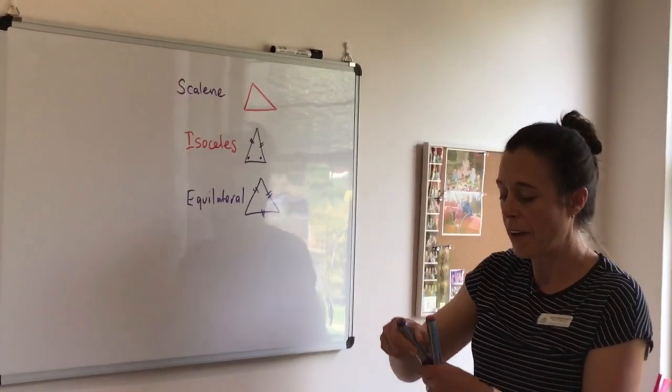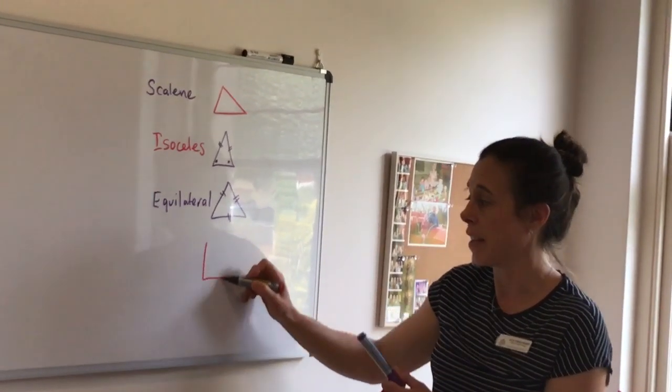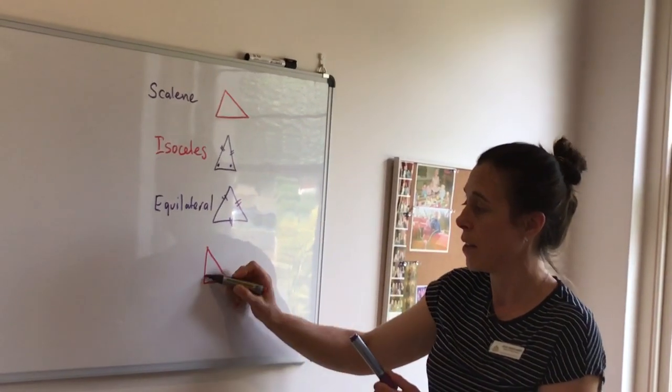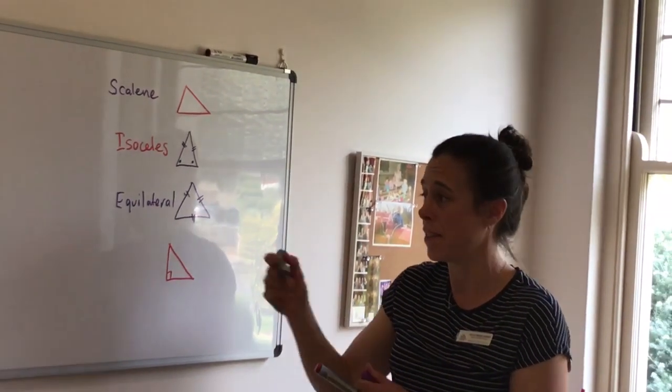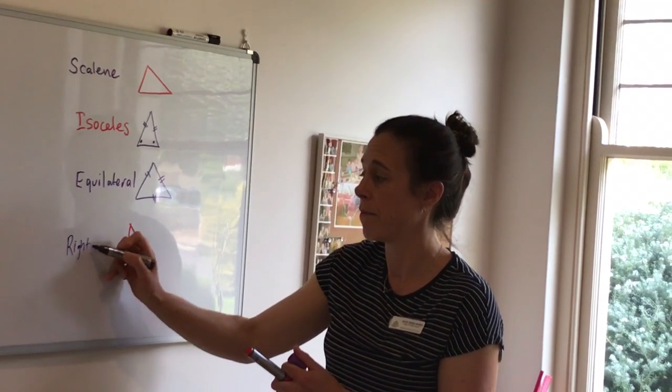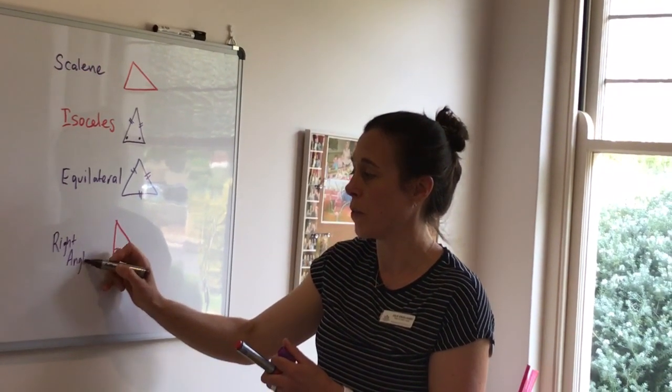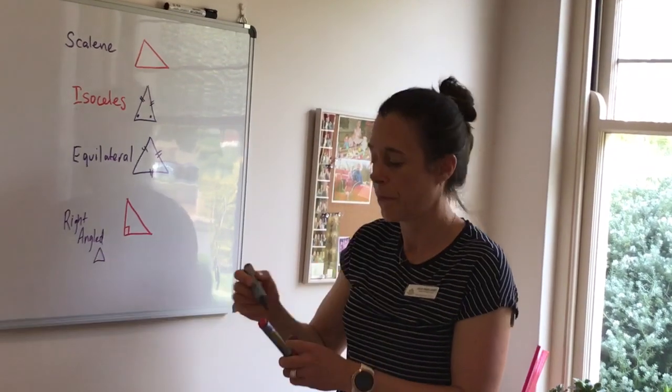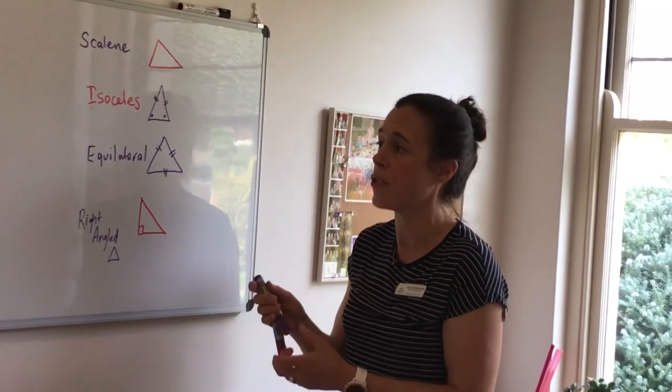And finally, we have our right angle triangle, where we have our 90 degrees, meaning that it's the right angle triangle. So our different types of triangles.